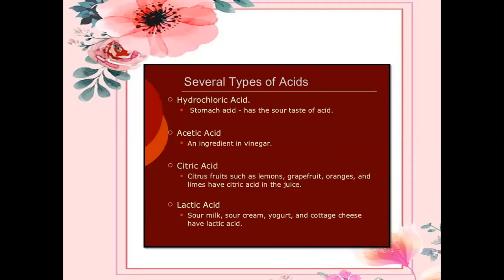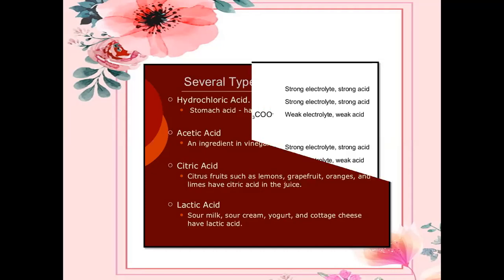We are discussing several types of acid. Hydrochloric acid is present in the stomach. Acids have a sour taste — acetic acid is an ingredient in vinegar. Citric acid is found in citrus fruits such as lemons, grapefruit, oranges, and limes. Lactic acid is found in sour milk, sour cream, yogurt, and cottage cheese.